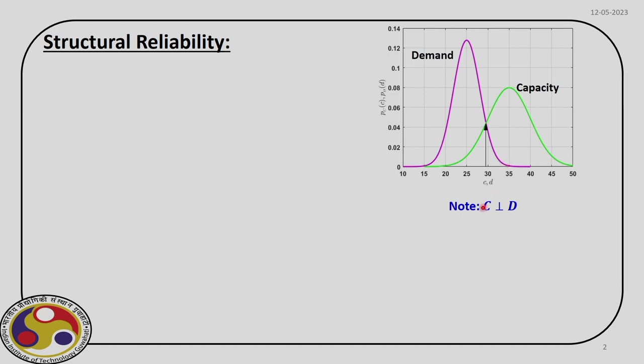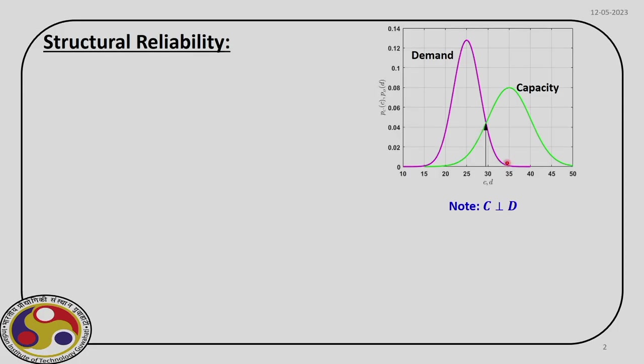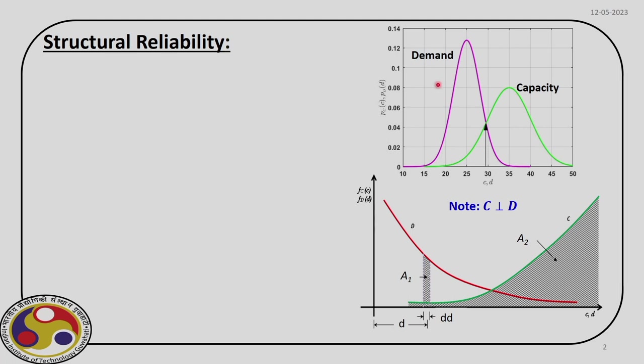In this format, capacity and demand are uncorrelated. The question we are going to investigate is how to evaluate the reliability or probability of failure. We can conclude that it is the common area under these two curves, defined by this vertical arrow, that dictates the probability of failure. To estimate that, we redraw these two curves showing the common area in a new figure.